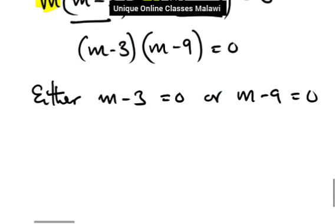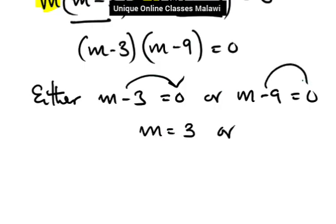So you can find the value: m is equal to positive 3, or the other side m is equal to positive 9.